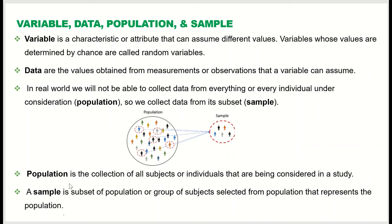Population is the collection of all subjects or individuals that are being considered in the study. In the real world, it's not possible to study everyone in the population, so we derive a subset — we select the sample. A sample is the subset of the population selected from the population that represents the entire population. One important thing: the sample must be representative of the entire population, otherwise the sample will be biased.